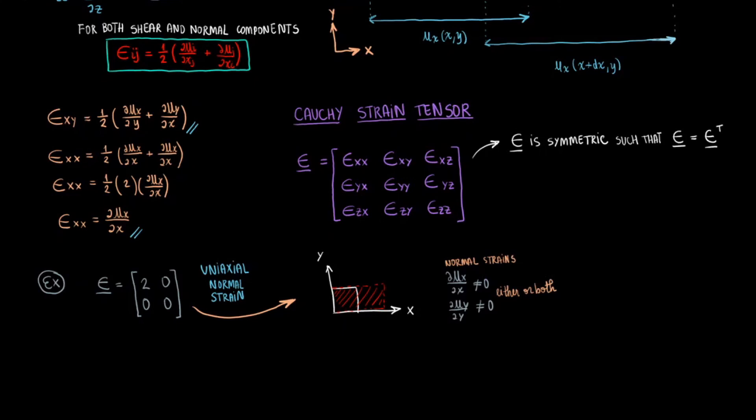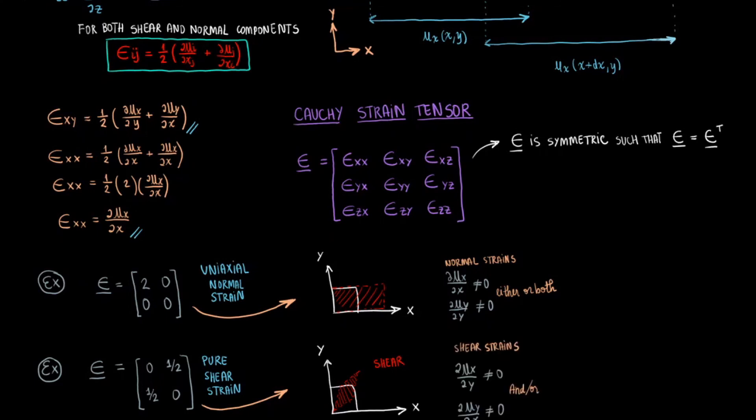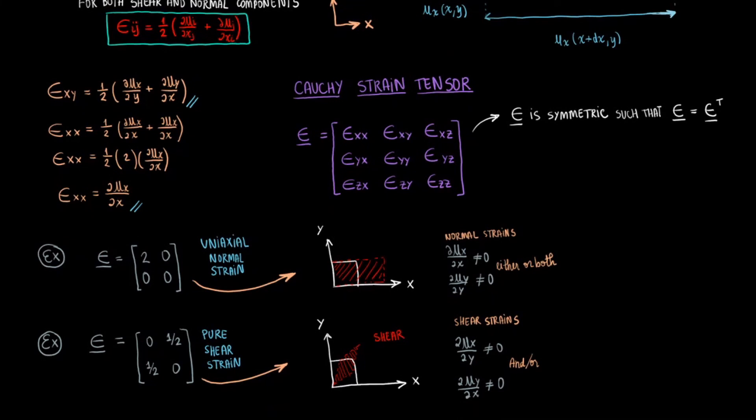When shear happens, the shape will seem more deformed, as if stretches and enlargements happened at an angle. In these cases, dux divided by dy and duy divided by dx will be non-zero.